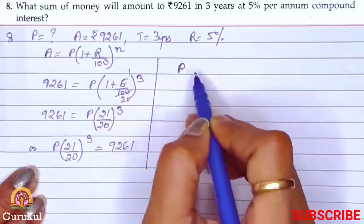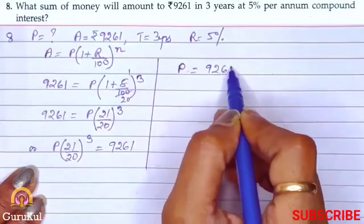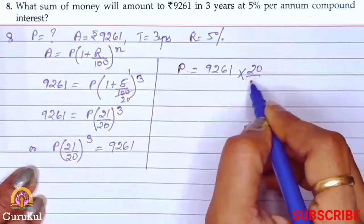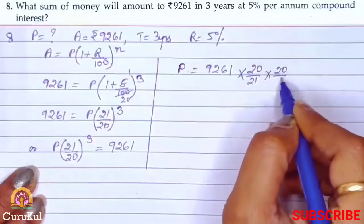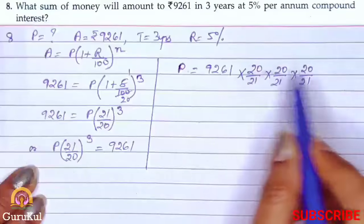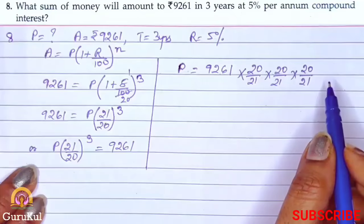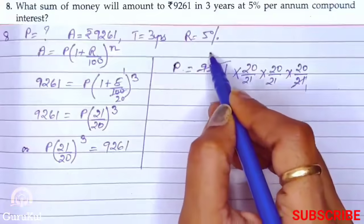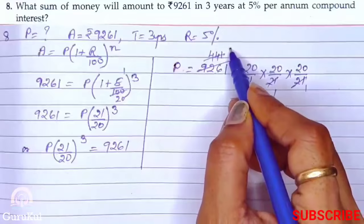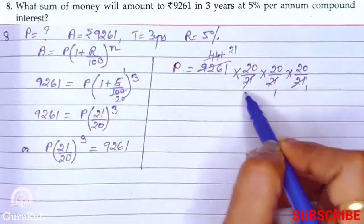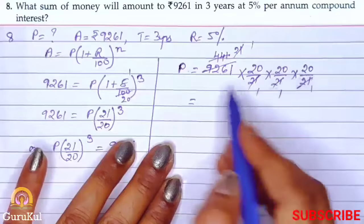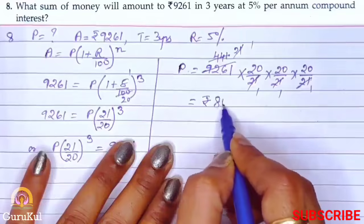So P = 9,261 × (20/21)^3 — the fraction is reciprocated and written three times because it is to the power 3. Calculating: 21 × 21 × 21 = 9,261 in the numerator cancels fully. In the denominator, 20 × 20 × 20 = 8,000. So the principal is Rs. 8,000.